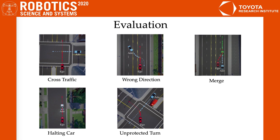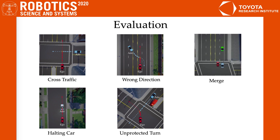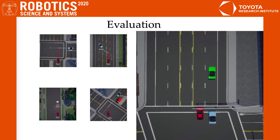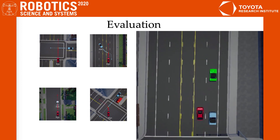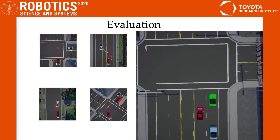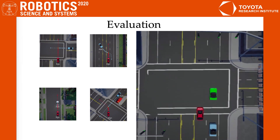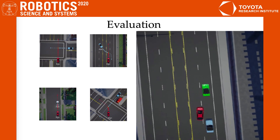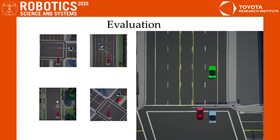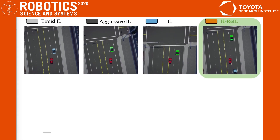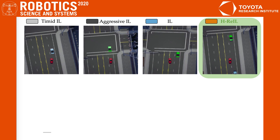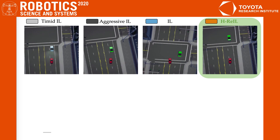We evaluate our algorithm on five near accident driving scenarios. Here I only introduce the merge scenario in detail. In the merge scenario, the red eagle car is trying to merge into the right lane as quickly as possible. Depending on the space that the blue car gives the red car, a timid driver will simply merge behind the blue car, while an aggressive driver will always try to merge between the blue and the green car. We ask users to rate different driving styles including timid, aggressive, imitation learning, and our approach.